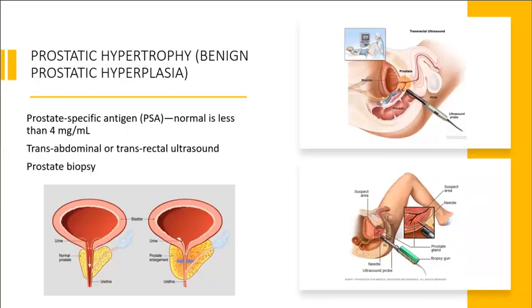With benign prostatic hyperplasia (BPH), there is enlargement of the prostate gland, causing urinary flow obstruction, incontinence, and possible infection. Occurrence increases with age, especially over 50. In severe, chronic BPH, blood creatinine, BUN, and hemoglobin may increase — assess these to rule out kidney damage and anemia. As part of prostate cancer screening, measure PSA (prostate-specific antigen). The normal PSA level is less than 4 ng/mL, and it can be elevated in prostatitis, prostatic hypertrophy, and prostate cancer.